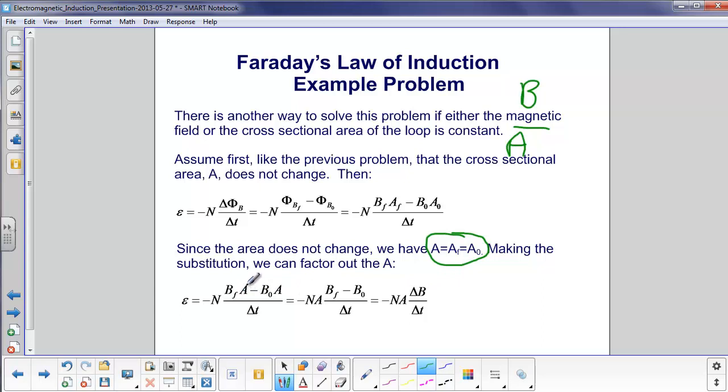And you'll notice we have A here, A here. We can factor it out. We bring it over here to the left. I now have BF minus B zero. Well, that's just the change in magnetic field. So we have this alternate expression here for Faraday's law, where it's just minus N times A times the change in magnetic field over the time, the change in time.